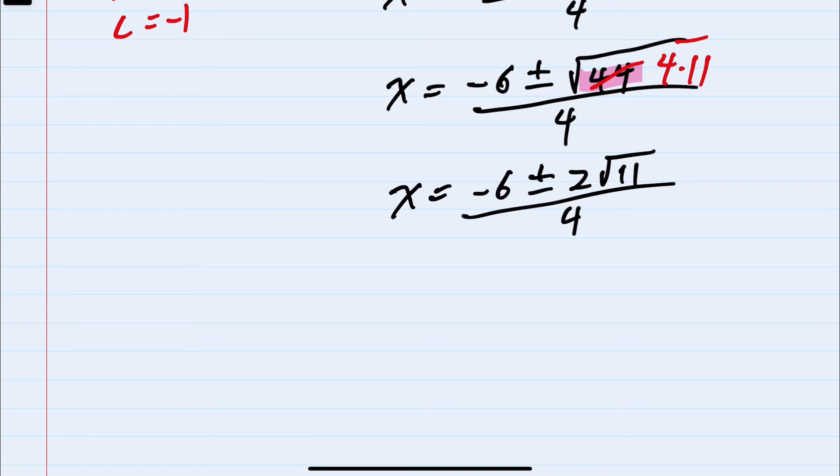So since my negative 6 plus or minus 2 square roots of 11 have a 2 in common, I can factor out a 2, leaving me with negative 3 from the first term, plus or minus now just a regular square root of 11 all over 4. And here I can cancel the 2 and 4. 2 goes into 2 once. 2 goes into 4 twice.